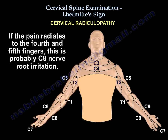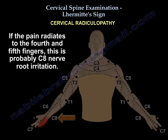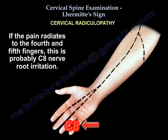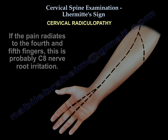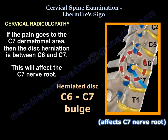If the pain radiates to the fourth and fifth fingers, then this is probably C8 nerve root irritation. So if the pain goes to the C7 dermatomal area, then the disc herniation is between C6 and C7, and that will affect the C7 nerve root.